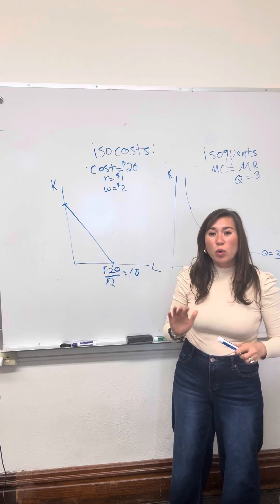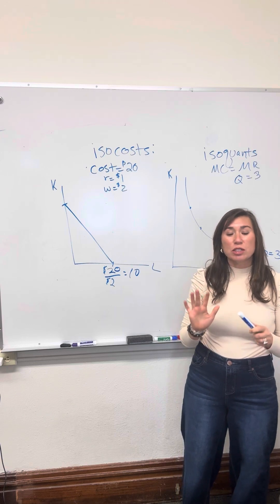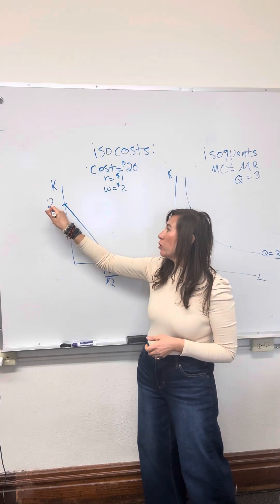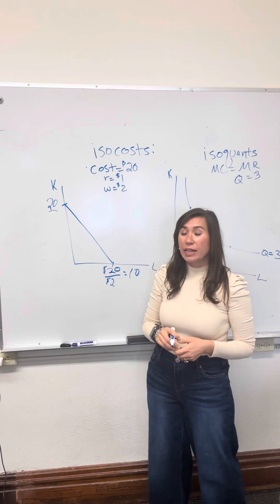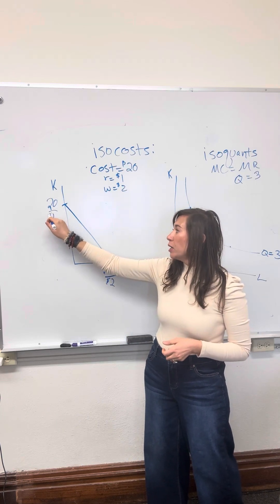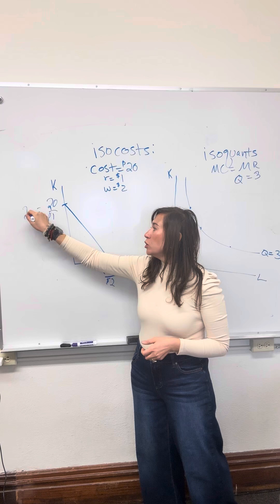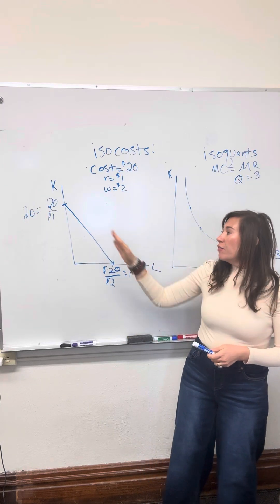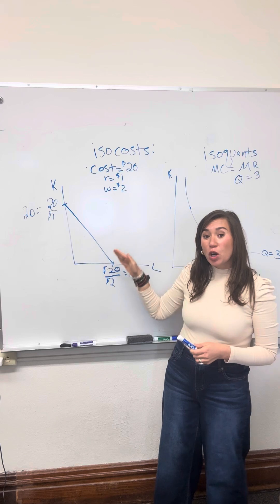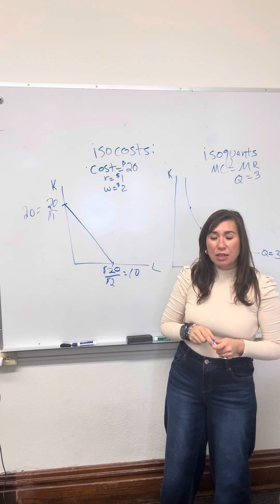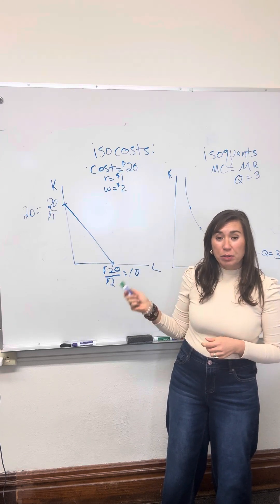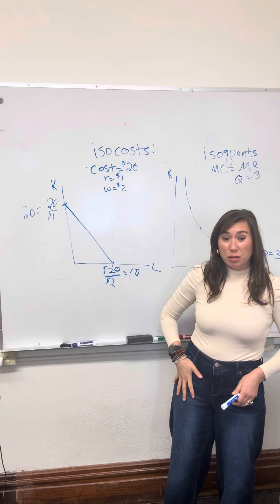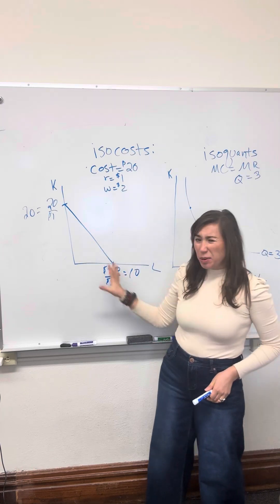This isn't necessarily what they would choose — this is just about what they can afford. Conversely, if they spend all of that $20 on capital, and the rental rate for capital is $1, they can have at most 20 hours of capital. That's an example of how we map out the different combinations of capital and labor, given a certain budget. So the isocost is simply about what we can afford.